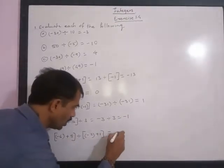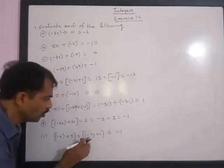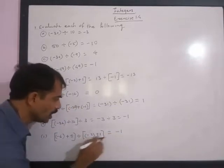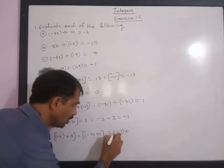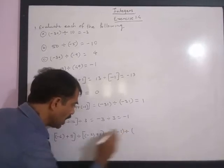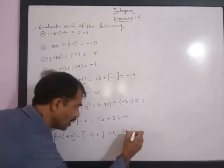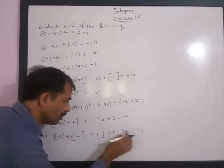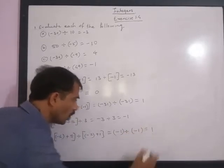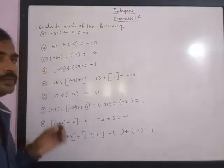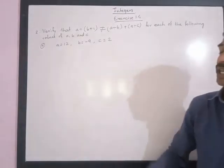Then negative 3 divided by 3 gives negative 1. Next, negative 6 plus 5 equals negative 1, and negative 2 plus 1 equals negative 1. We have already studied this case of same integer division in the Integer chapter.